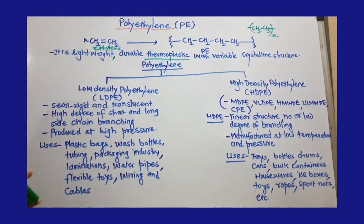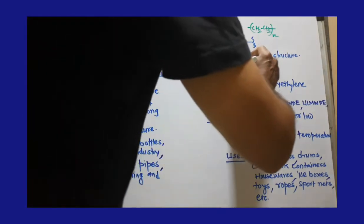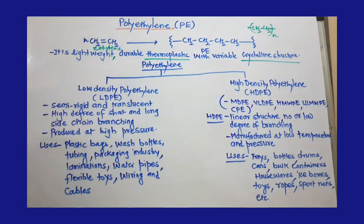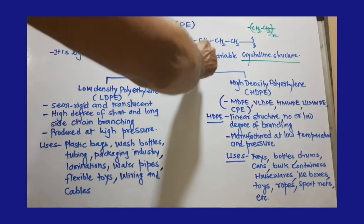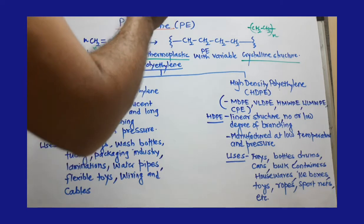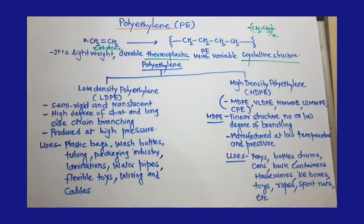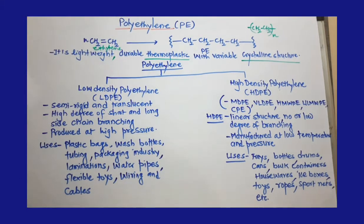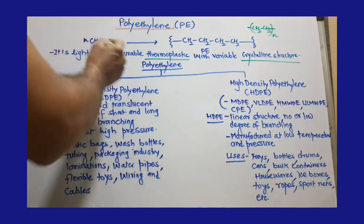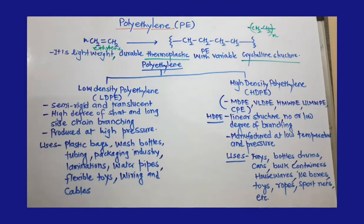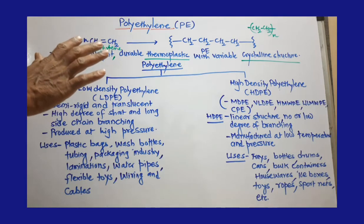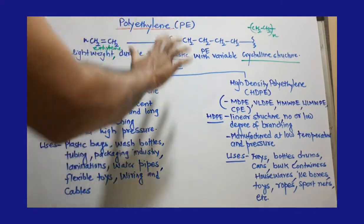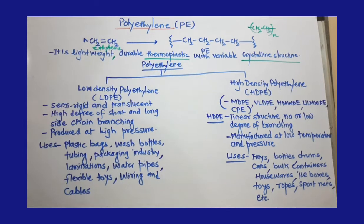It has a variable crystalline structure. If you look at how polyethylene is arranged, you can see crystalline structures — you can even see photographs of polyethylene crystals. Since this is a very popular polymer on earth, we must know its details.